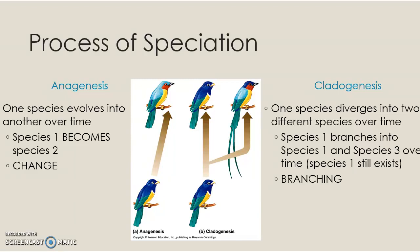This is the third installment for the lecture. We talked about convergent evolution, parallel evolution, and divergent evolution. This is similar but this is speciation, not just evolution — the creation of a new species. And we do that two different ways.